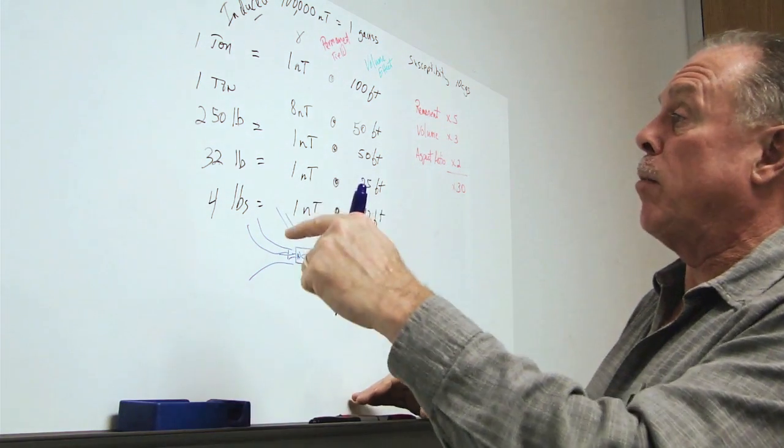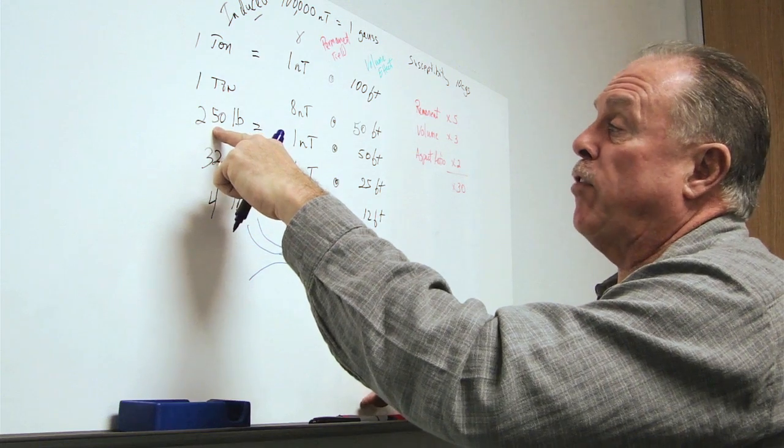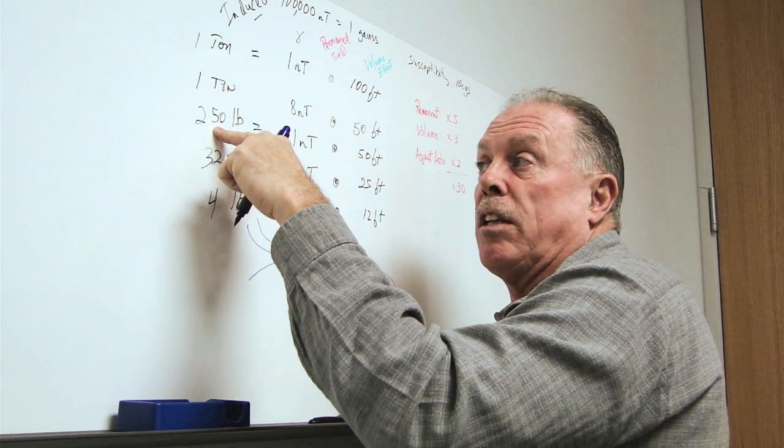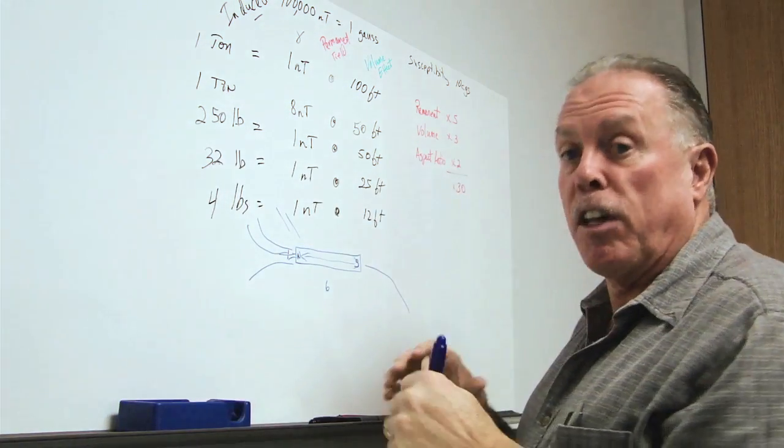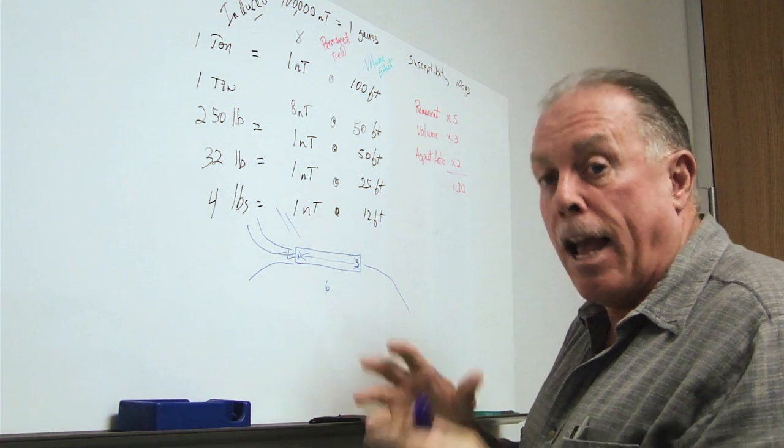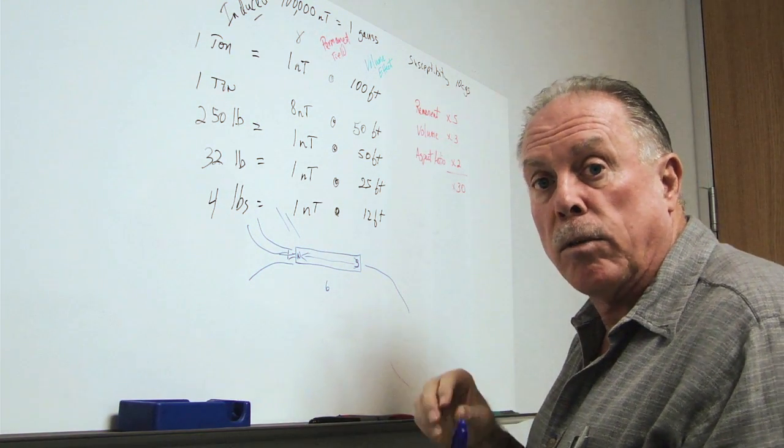So what that really means is that, for instance, 250 pounds at 50 feet, we might easily be able to see something that's more in the 10 pounds range simply because if it is in fact hollow, if it is in fact permanently magnetized, and if it is in fact longer compared to its diameter.